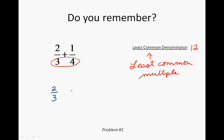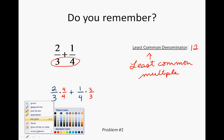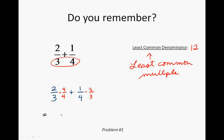Now express two-thirds and one-fourth as fractions with a denominator of 12. I write the problem two-thirds plus one-fourth, leaving space to fill in. I ask: three times what equals 12? That's four — so I multiply two-thirds by four over four. Since four over four equals one, I'm not changing the value. For one-fourth: four times what equals 12? That's three, so I multiply by three over three.